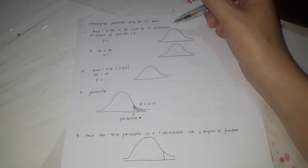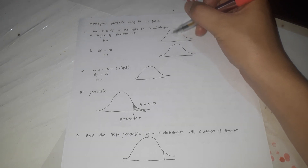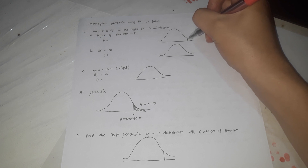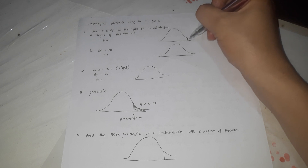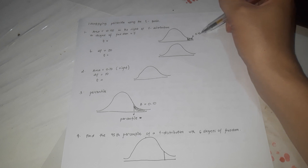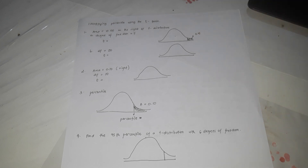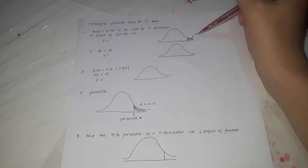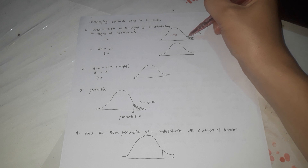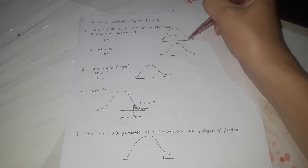First, we're going to draw it. The area is 0.05 on the right. The total area is equal to 1, so if only 0.05 is on the right, the area on the left of the T-value we are looking for is 0.95, because the total should be 1.